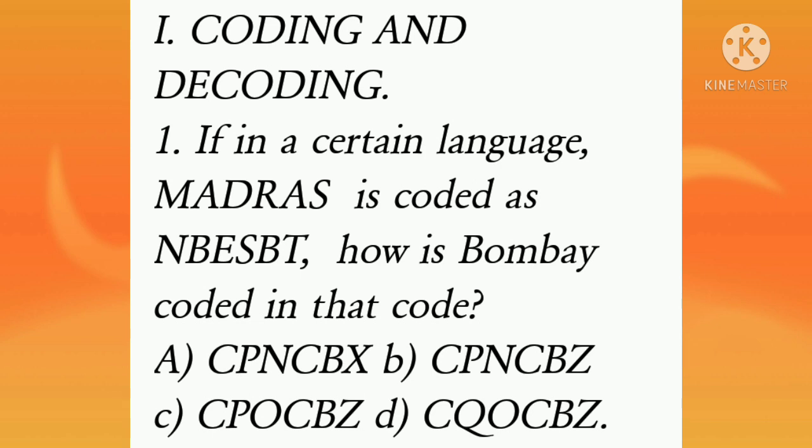A option, C-P-N-C-B-X. B option, C-P-N-C-B-Z. C option, C-P-O-C-B-Z. D option, C-Q-O-C-B-Z. Which option is correct?